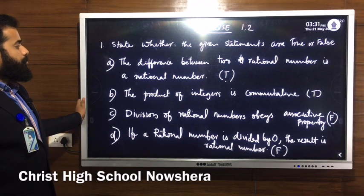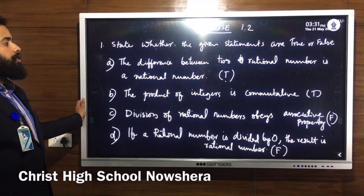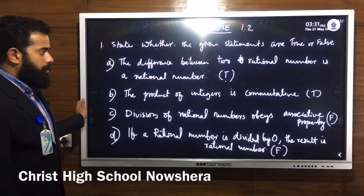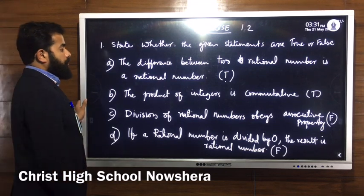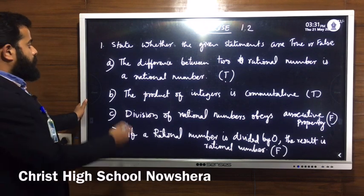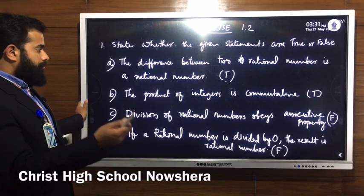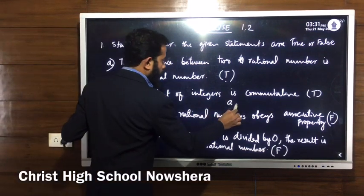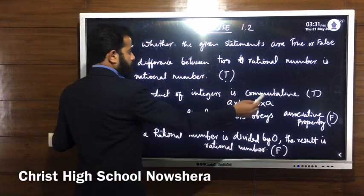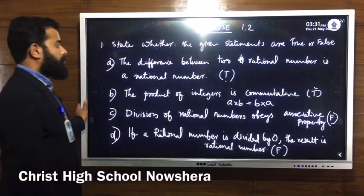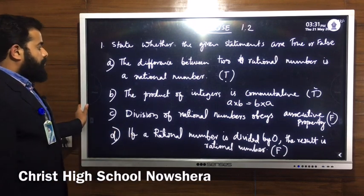Second statement: the product of integers is commutative. Think about the commutative property — A into B is equal to B into A. If you take the product between two integers, it holds the property A into B equals B into A, so the statement is always true, because it obeys the commutative property under multiplication.